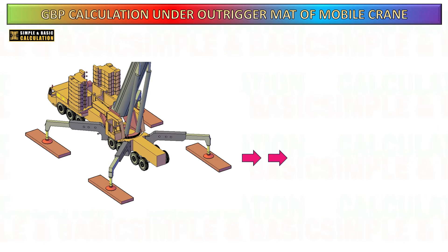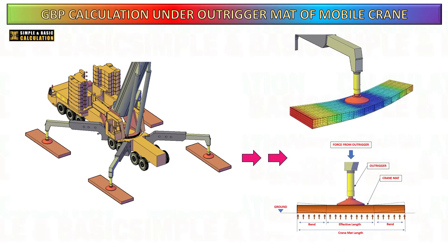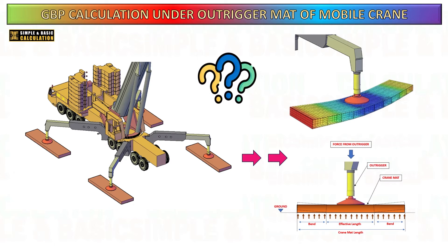When everyone involved has a strong understanding of GBP, soil collapse, sinking, or instability can be prevented. These problems occur when the ground bearing pressure exceeds what the soil can withstand, potentially causing accidents, equipment damage, or injuries. Determining the GBP enhances the stability of the crane mats and the ground below them.